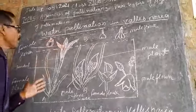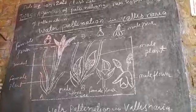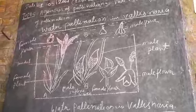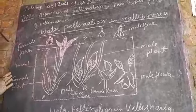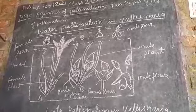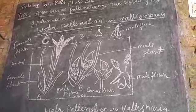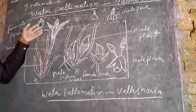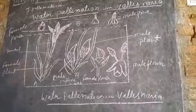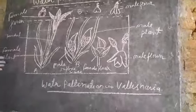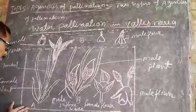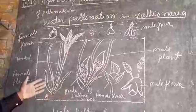In this way, pollination is achieved in the case of the water pollination scenario. This is the most common example of water pollination, and it demonstrates how water pollination works.